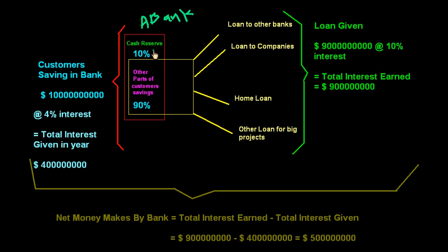But the bank keeps some money in cash reserve, in case customers need to withdraw money. So 10% is kept as reserve and 90% is extra fund which the bank may use in different projects.